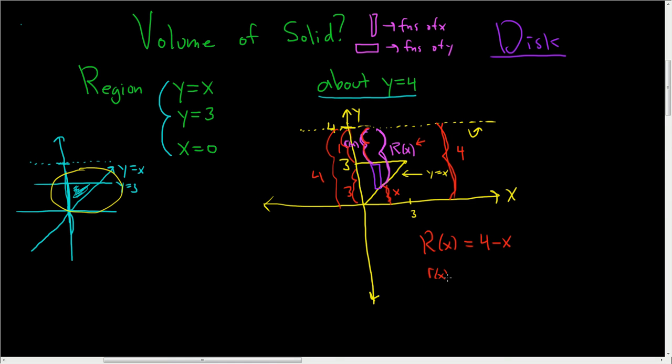So little r of x is equal to 1. Now we can go ahead and write the integral for the volume. So we have a π. And we're integrating with respect to x. So we're going from 0 to 3. And we take the big R and we square it. So it's 4 minus x quantity squared. And we subtract and we take the 1 and we square it. And then we have a dx here.